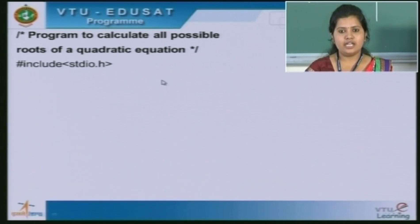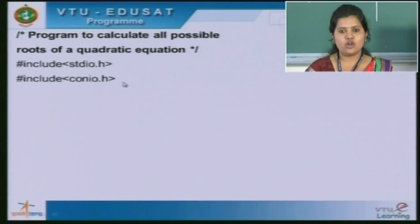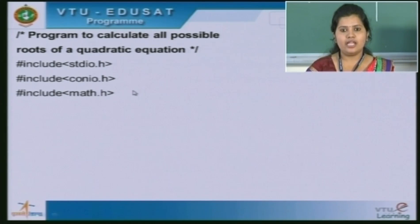The first header file we are using is stdio.h. stdio stands for standard input-output header file. The next header file we are including is conio.h. Conio stands for console input-output header file. The next header file is math.h, which stands for mathematical header file. Since we are using some mathematical library functions like square root and fabs, these two functions are defined in this header file.